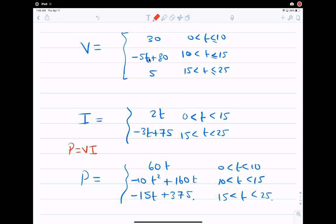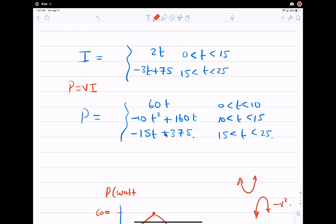So if I look at these, let's go ahead. 30 times 2t from 0 to 10, 30 times 2t is 60t. Now negative 5t plus 80, between 10 and 15. Here 10 and 15 is still in this interval. So 2t times negative 5t plus 80. 2t times negative 5t is negative 10t squared. 2t times 80 is 160t. And the last one is 5 times this, which is negative 15t plus 375. Just multiply it.